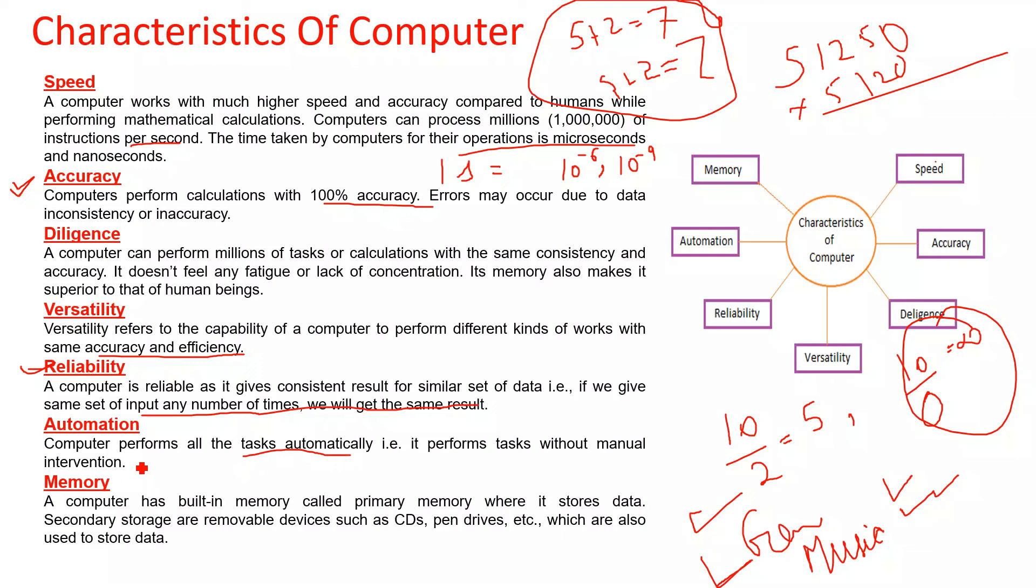Memory. Computer has built-in memory called primary memory where it stores data. Primary memory is volatile, secondary is non-volatile. Basically when we do work we use primary memory, when we save we use secondary memory. For example, CDs and drives are secondary memory, RAM is primary memory. We will discuss this in detail later.